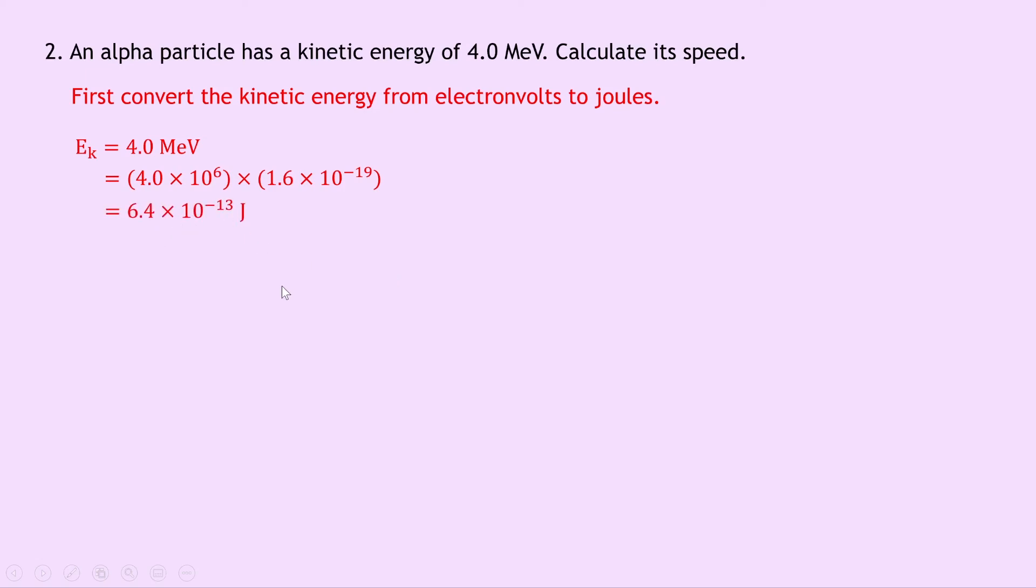Now we can write down what we know from the question. We're trying to find the speed V. We know that the mass of the alpha particle is 6.64 times 10 to the minus 27 kilograms from the datasheet. We know that the kinetic energy is 6.4 times 10 to the minus 13 joules. Putting this into our equation for kinetic energy we have Ek equals a half mv squared.